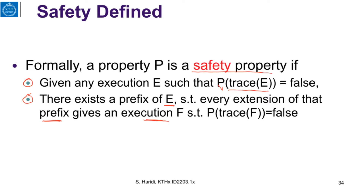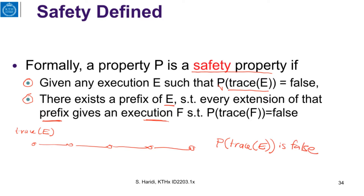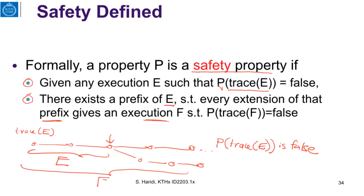We can illustrate this by drawing: given an execution E, we look only at its trace. If the trace of E does not satisfy P — meaning P of trace(E) is false — then in this execution there is some prefix, the prefix where the bad event happens, such that every extension of that prefix also gives an execution F whose trace also violates property P.